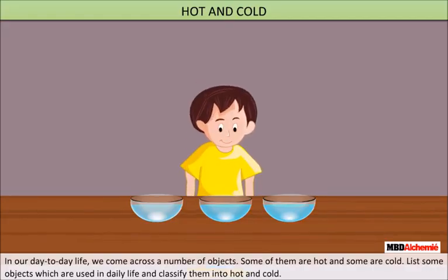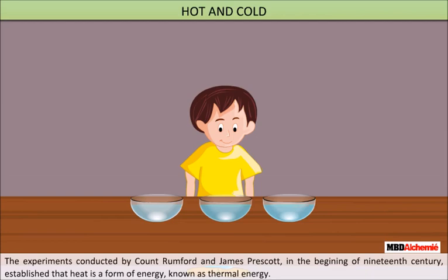In our day-to-day life we come across a number of objects — some of them are hot and some are cold. List some objects which are used in daily life and classify them into hot and cold. The experiments conducted by Count Rumford and James Prescott in the beginning of the 19th century established that heat is a form of energy.